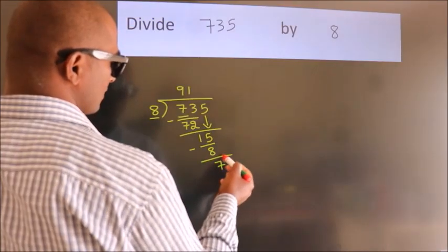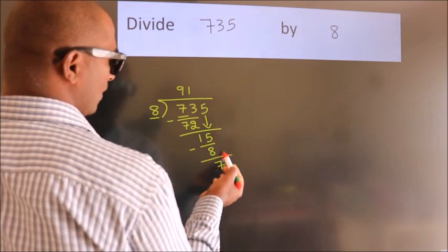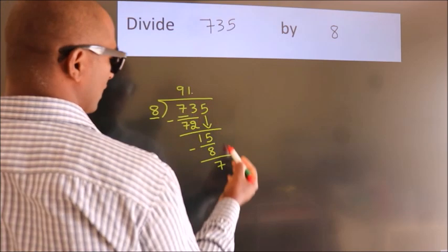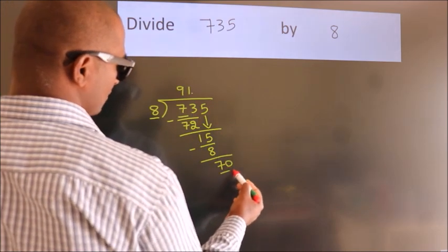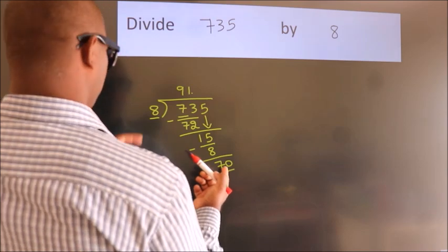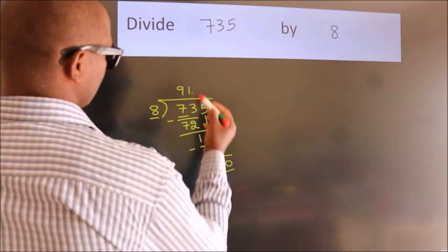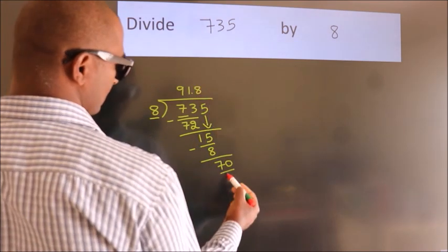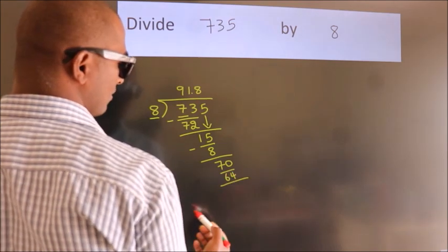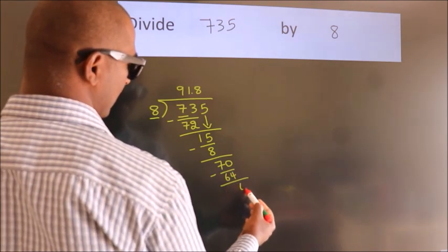After this, no more numbers to bring down. So what we do is, we put dot, take 0. So 70. A number close to 70 in 8 table is 8 eights 64. Now we subtract, we get 6.